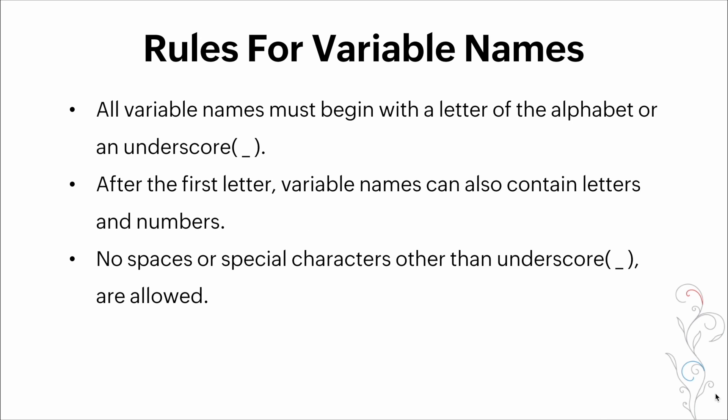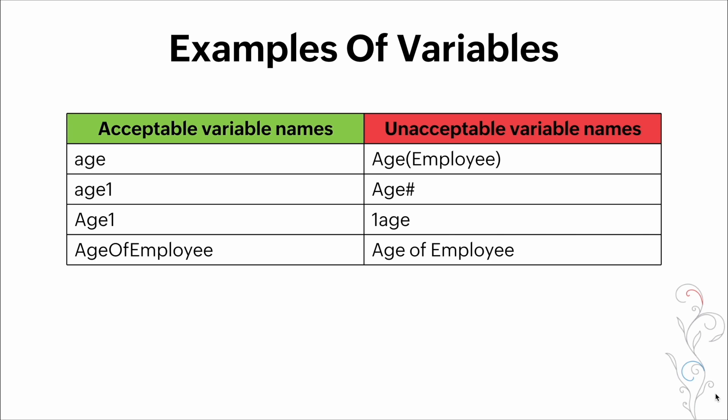Now there are rules for variable names. All variable names must begin with a letter or underscore. After the first letter, variable names can also contain letters and numbers. No spaces or special characters other than the underscore are allowed. Here are some examples of variable names. The ones on the left side are acceptable names and the ones on the right are unacceptable.